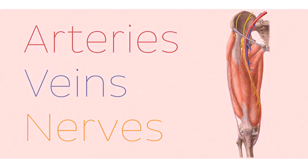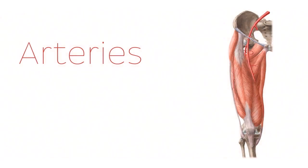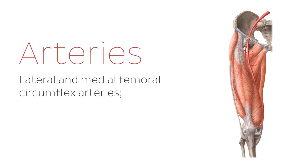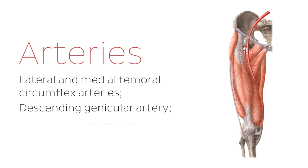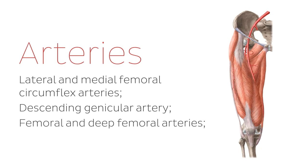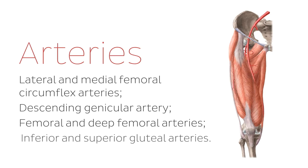Let's start with the first topic on the list: the arteries, now seen isolated on the image on the right. In terms of arteries, we're going to be talking about the lateral and medial femoral circumflex arteries, the descending genicular artery, the femoral and deep femoral arteries, and the inferior and superior gluteal arteries.